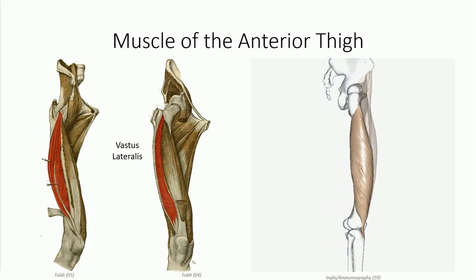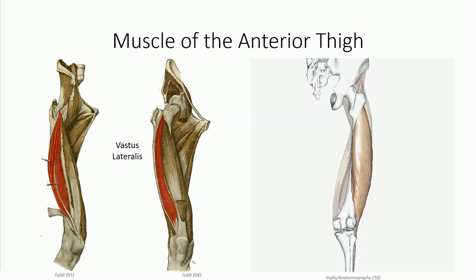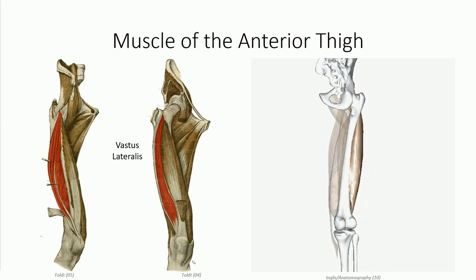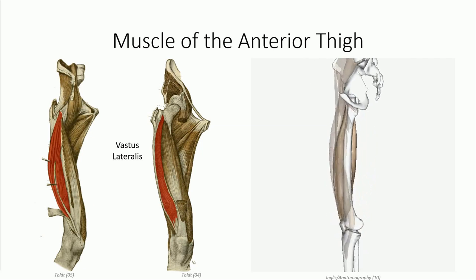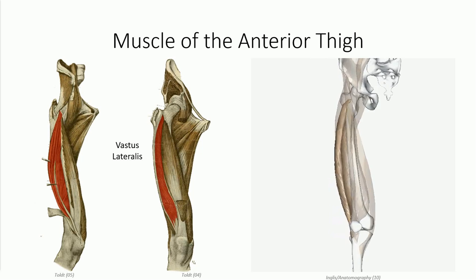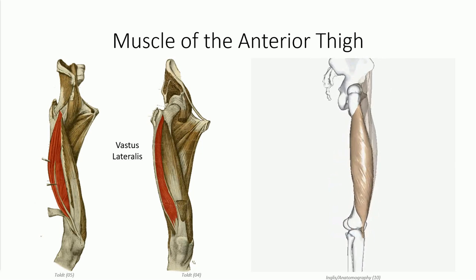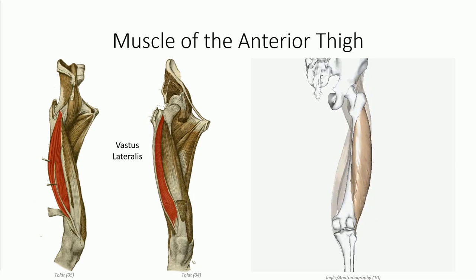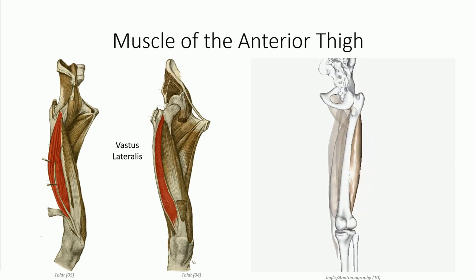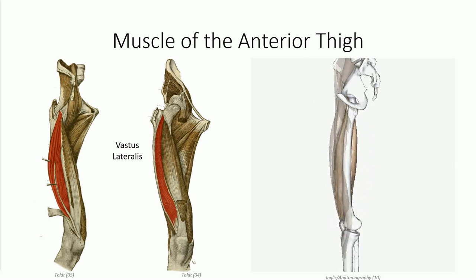Finally, the vastus lateralis can be seen lateral to the rectus femoris. Similar to the vastus medialis, it has a long origin off the lateral lip of the linea aspera.